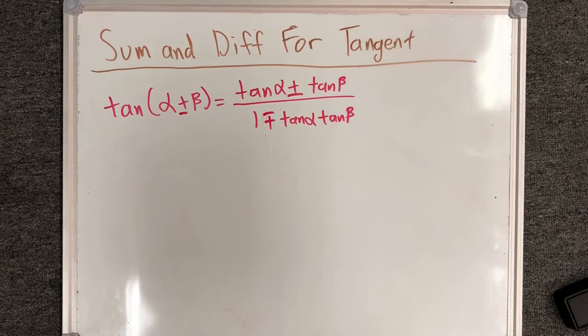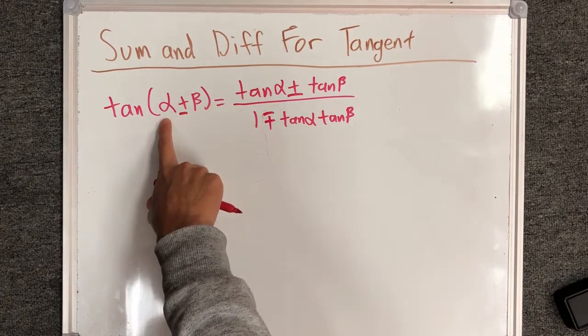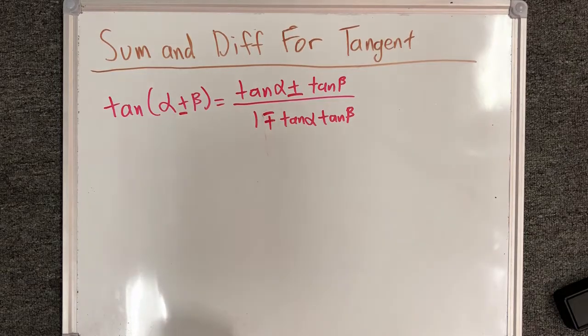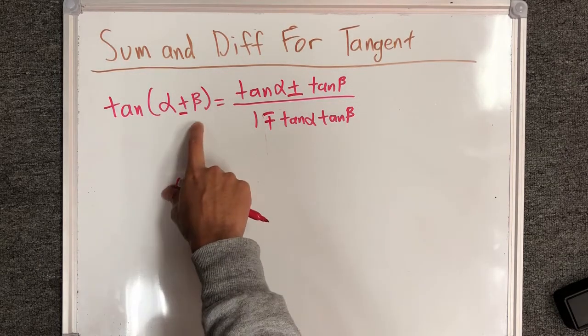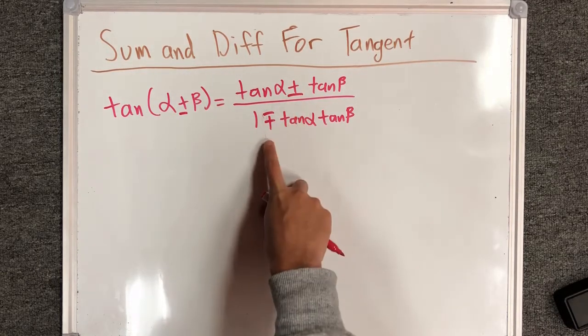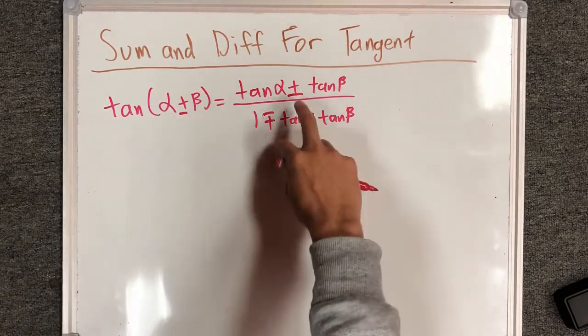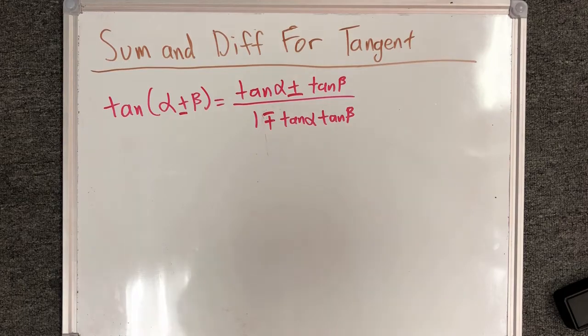So to summarize, for tangent, if it is alpha plus beta, you will have a plus on top and minus on the bottom. If it is alpha minus beta, you'll have minus on top and plus on the bottom. The signs on top and in the angle match, and the signs between numerator and denominator are opposites of each other.